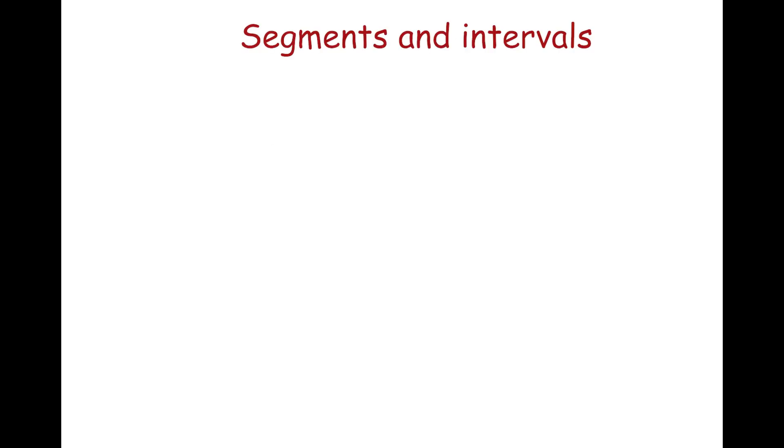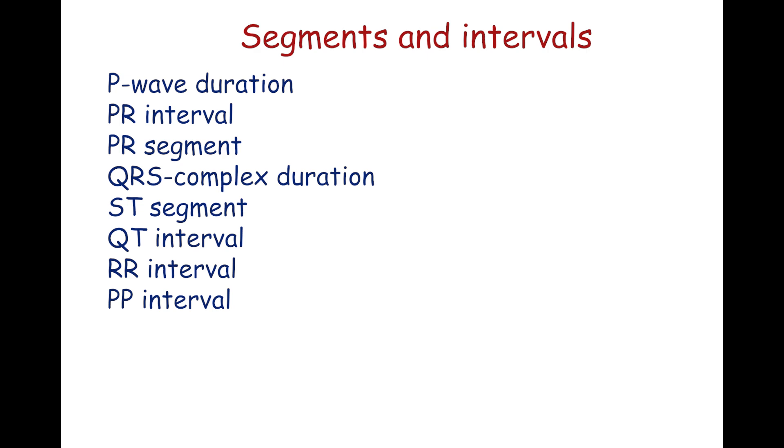Among the characteristics of ECG waves, P wave duration, PR interval, PR segment, QRS complex duration, ST segment, QT interval, RR interval, and PP interval are important in ECG interpretation.